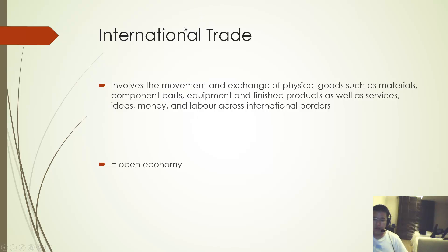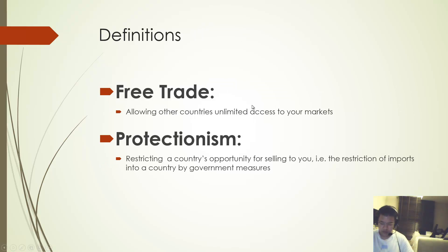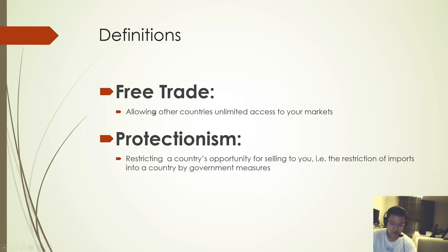International trade involves the movement and exchange of physical goods such as materials, component parts, equipment and finished products, as well as services, ideas, money and labor across international borders. Free trade, at its most basic, means allowing other countries unlimited access to your markets. However, there are things such as protectionism and trade barriers.